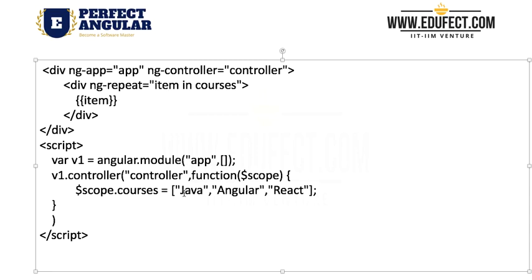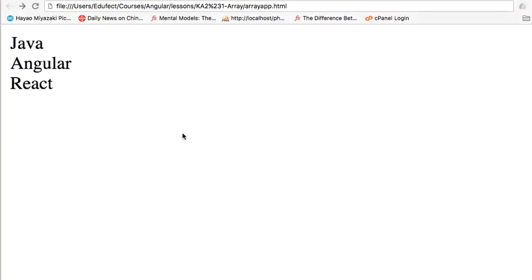One by one starting from the first one, then the second one and the third one, and it will keep on printing it. Because of this line, item will keep on getting displayed. So when we run this HTML file what should we see? We should see Java, Angular, React printed on the screen. Let us run it and see. When we run it we get Java, Angular, React so it is looping on all the values and displaying it.